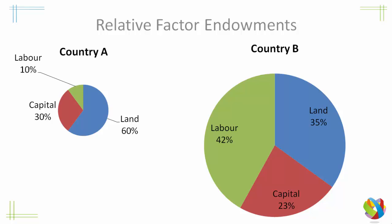They posited the idea that countries with a relative abundance of a particular factor of production would export products that used that factor to produce goods. So looking at these, Country A has sixty percent of its factors of production as land, whereas for Country B it's only thirty-five percent.